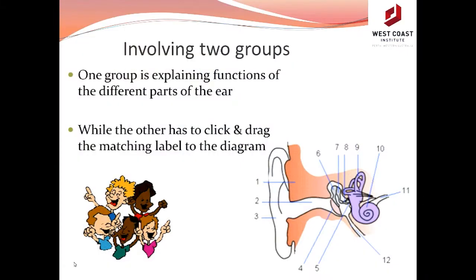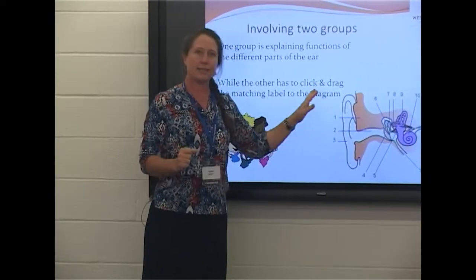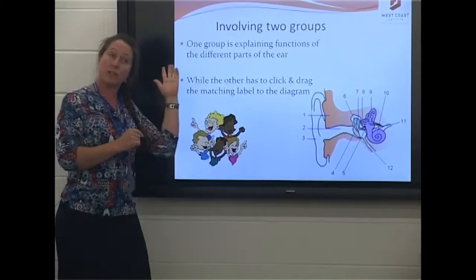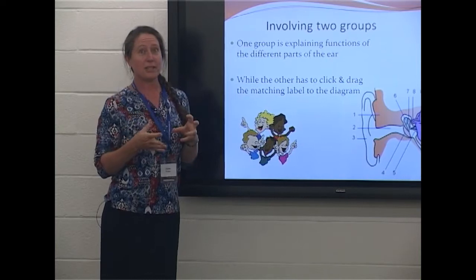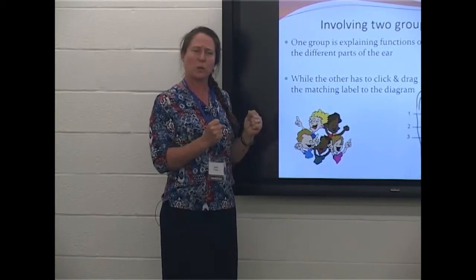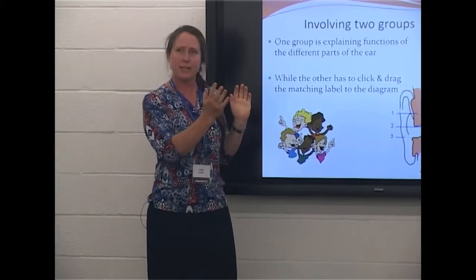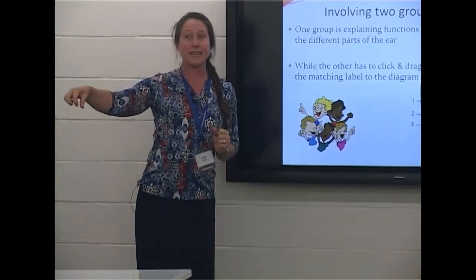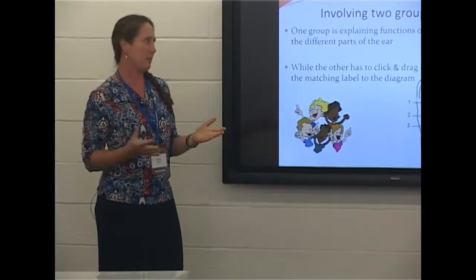Another thing we do involves two groups: one at the whiteboard and one in the class. With a diagram of an ear, one group might describe the function — 'this is the pinna and it collects the sound waves, it's the outside part' — and then the team at the board clicks and drags the label to it. Or you can make it trickier where the group doesn't tell you which part it is, they just tell you the function. Then the team at the board has to guess, and you could even have a third group of judges saying yes, that's correct, or no, it isn't.